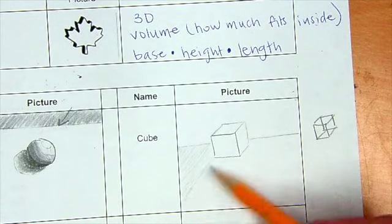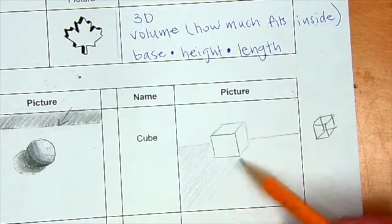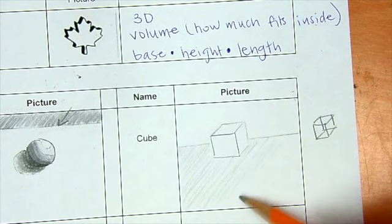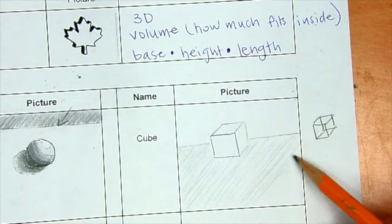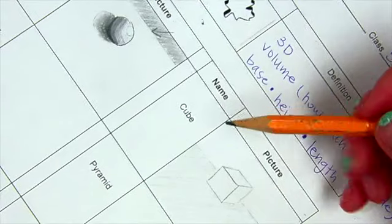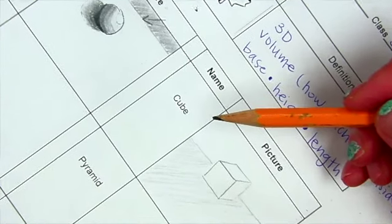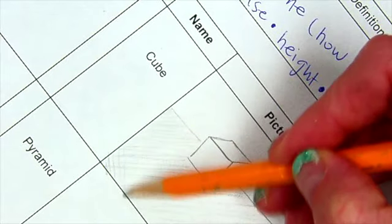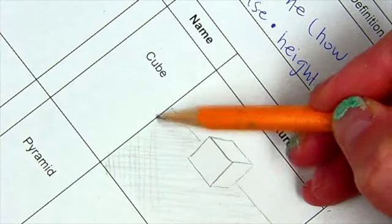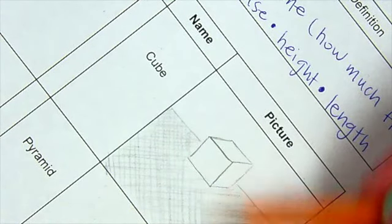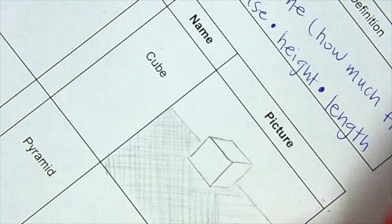We're going to start with hatching, which is your diagonal lines across. Then we're going to come back and make this cross hatching. It's going to end up looking like there's a table cloth on this table. So with cross hatching, I'm going to come back with diagonal lines the other way.